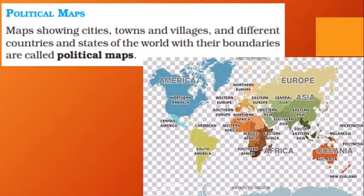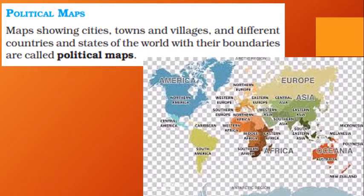The next type is the political map. In a political map you can see country names and state names. Compared to a physical map, you can see names and boundaries in detail — you can identify which country this is and which states are within it. This map is called a political map.